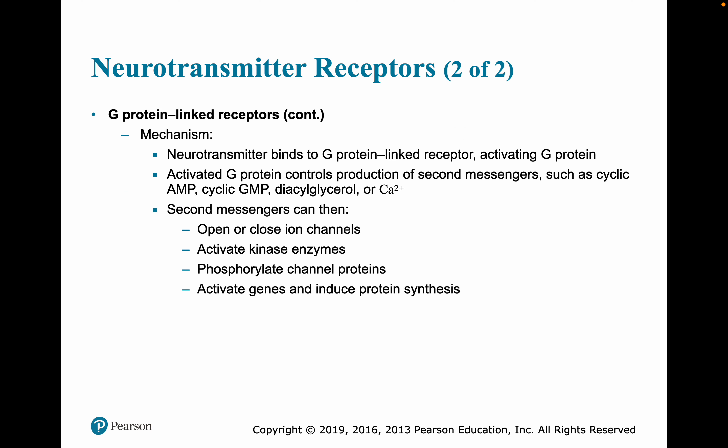In the G-protein-linked receptor mechanism, the neurotransmitter binds to a G-protein-linked receptor, activating a G-protein. The G-protein controls the production of second messengers, which might include cyclic AMP, cyclic GMP, diacylglycerol, or calcium itself. The second messengers will then open and close ion channels, activate kinase enzymes, phosphorylate channel proteins, or turn genes on or off.